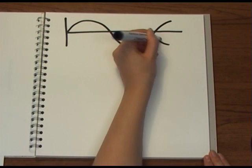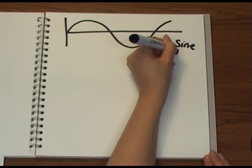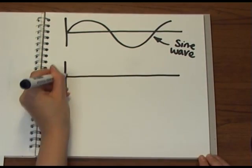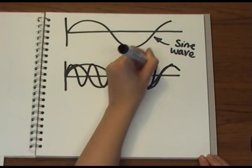When you make sound with your vocal cords, it's not just a nice, clean, single sine wave like this, but a mixture of lots of different frequencies.